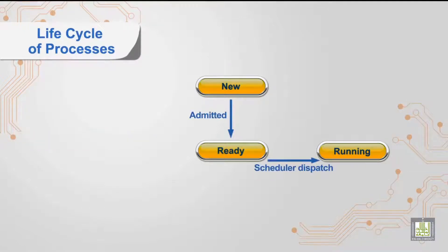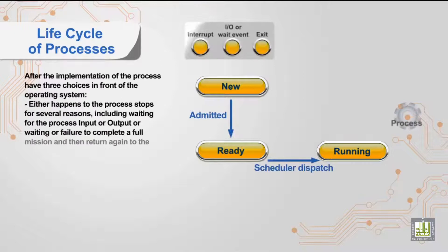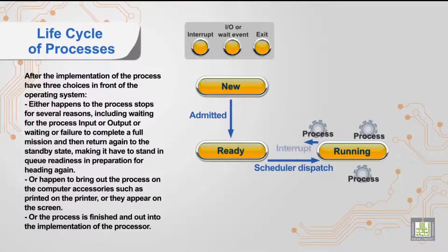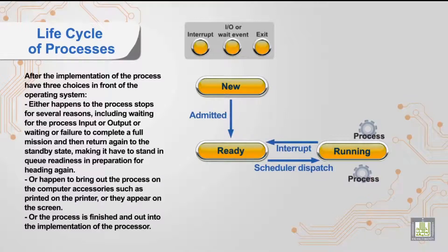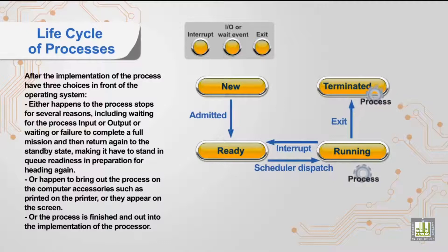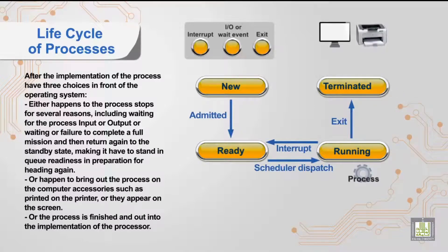After the implementation of the process, there are three choices in front of the operating system. The process stops for several reasons, including waiting for input or output, or failure to complete a full mission, and then returns again to the standby state, making it stand in a ready queue.